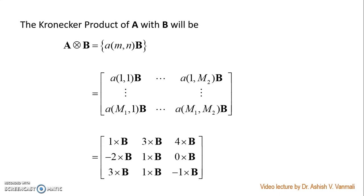In this case, let me substitute the value of A. We will get this result as 1 into B, 3 into B, 4 into B, minus 2 into B, 1 into B, 0 into B, 3 into B, 1 into B, minus 1 into B.